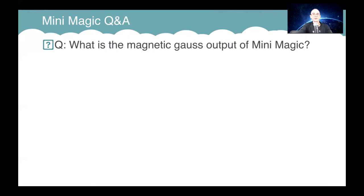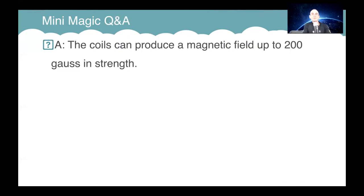Oh, I think it is perfect. Okay, the coils can produce a magnetic field of up to 200 gauss in strength. There's 200 gauss when you stack them, when you don't stack them they're 100 gauss each. So each one is 100 miles an hour, and that's 200 miles an hour.